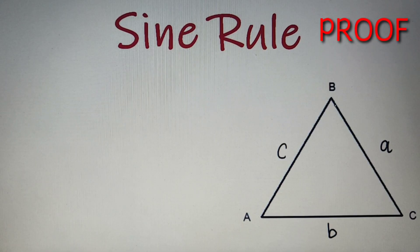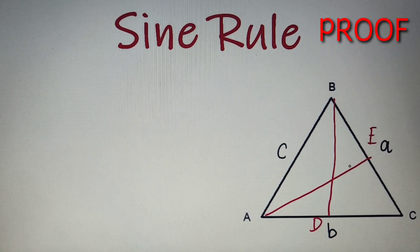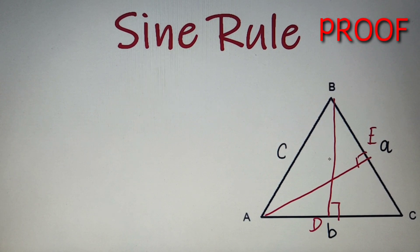For proving the sine rule, let's draw two perpendiculars: one BD on the side AC and one AE on the side BC. Now since these two are perpendiculars, the angle will be 90 degrees. And let's take the lengths of BD and AE as H and H1 respectively.